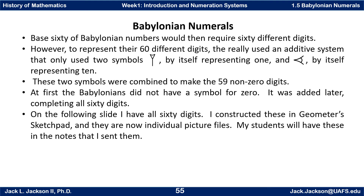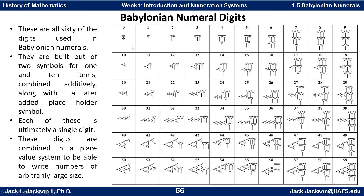In the following slide, I have all 60 digits. I constructed these in Geometer Sketchpad and then made them into pictures. So for my students, if you take the notes I give you as a Word file, you can click on those individual picture files and copy and paste them to work with Babylonian numerals. Here's the table. This is the symbol for 0 that was added later. These are all 60 of the digits used in Babylonian numerals, all built out of two symbols — the symbol for 1 and the symbol for 10 — combined additively.